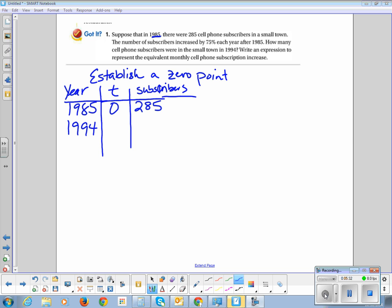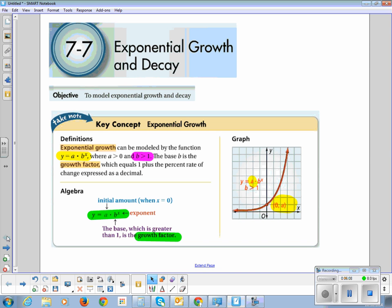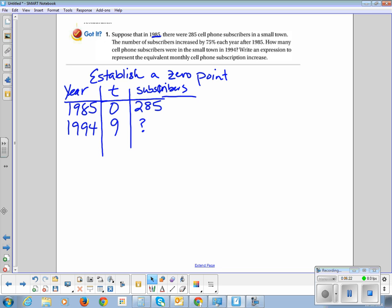So in 1994, how many years later is 1994? So 85, 95 would be 10 years, but it's 94, so it is 9 years. My suggestion to you guys when you're starting a word problem is to write all your information down and put a question mark when you don't know things, and that's okay. Alright, so if we go back and look at exponential growth, we need to start out with our equation here, where y equals, we've got our initial amount, our base, which is our growth factor, and our exponent.